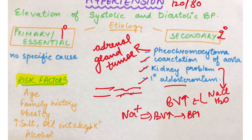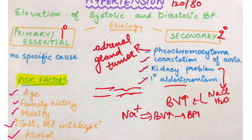Then comes the risk factors. Pahela risk factor hai age — old age mein zyada logon ko hota hai. Then family history — doctor poochta hai ki aapki family mein kisi ko hai, toh pata lagta hai ki familial hypertension hai. Next is obesity — atherosclerosis ho sakti hai. Next is salt increase — sodium chloride, potassium ka intake kam, oil ka intake zyada, alcohol ka intake zyada, aur stress hormones — yeh sab obviously more hypertension cause kar sakte hai.